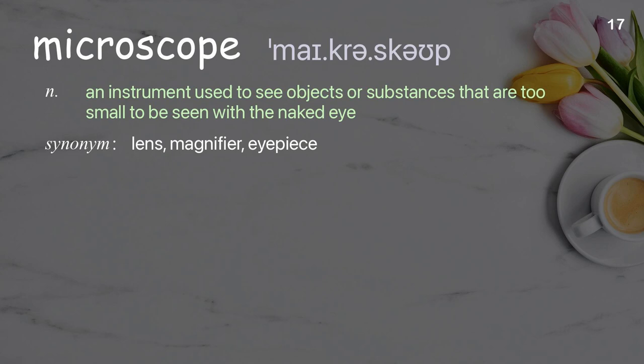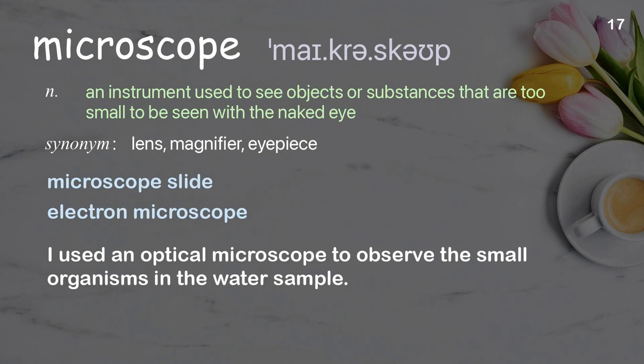Microscope: An instrument used to see objects or substances that are too small to be seen with the naked eye. Examples: microscope, electron microscope.